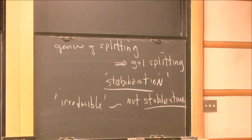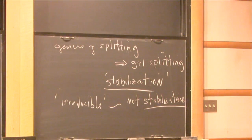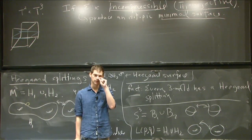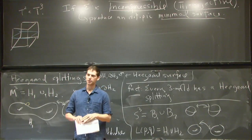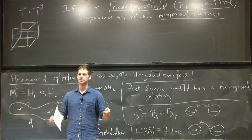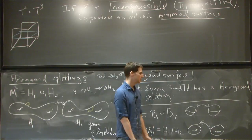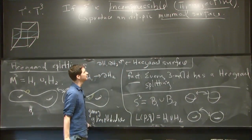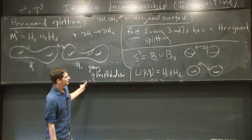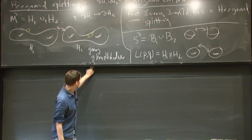A basic question in topology is: given a three-manifold, list all of its irreducible Heegaard splittings. It's basically a question of how you can put a Morse function on a manifold in the simplest possible ways.